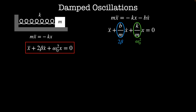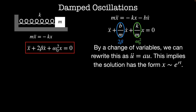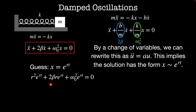This is reminiscent of a quadratic equation, so I'll construct a change of variables such that the equation of motion looks like ü = a·u. This implies that the solution has the form x ~ e^(rt), but we don't know r yet. Taking this as an ansatz and plugging it into the equation of motion, I get r²·e^(rt) + 2β·r·e^(rt) + ω₀²·e^(rt) = 0. Dividing through by e^(rt), I end up with the characteristic equation: r² + 2β·r + ω₀² = 0, which is a quadratic equation I can solve for r.